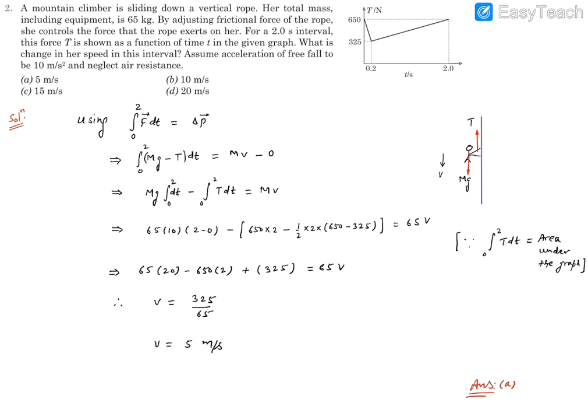That means the velocity of this mountain climber becomes 5 m/s or changes by 5 m/s, because it is asking about the change in speed. So I have taken initially as 0 and then found it to be 5. So the change is going to be 5. Even if we take initially as u, this change will come out to be 5. So we can claim that 5 m/s is the change that is being asked. So option A will become the right response. Thank you.